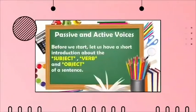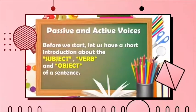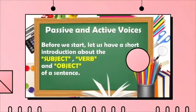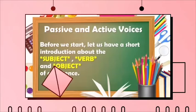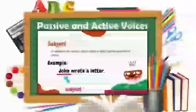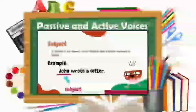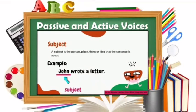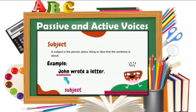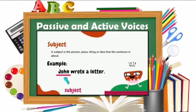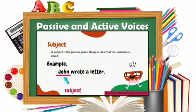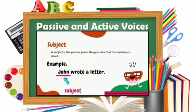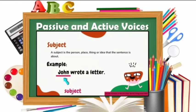Before we start, let us have a short introduction about the subject, verb, and object of a sentence. A subject is the person, place, thing, or idea that the sentence is about. Example: 'Jan wrote a letter.' In this sentence, the subject is Jan.